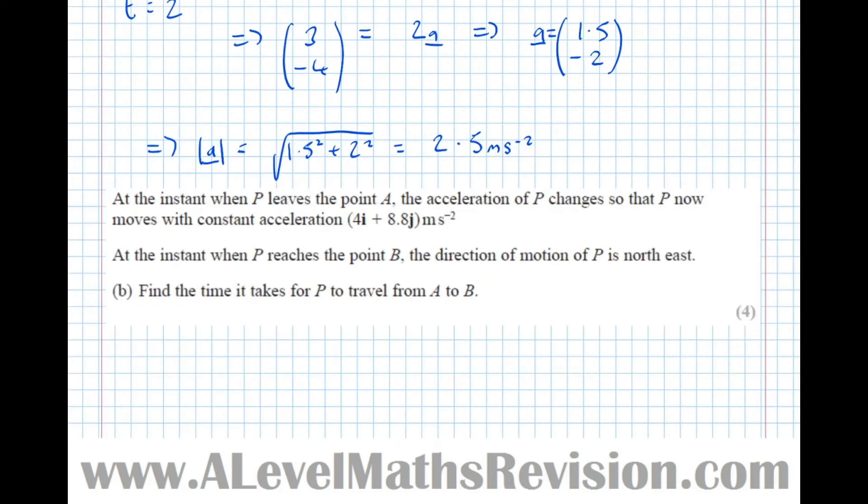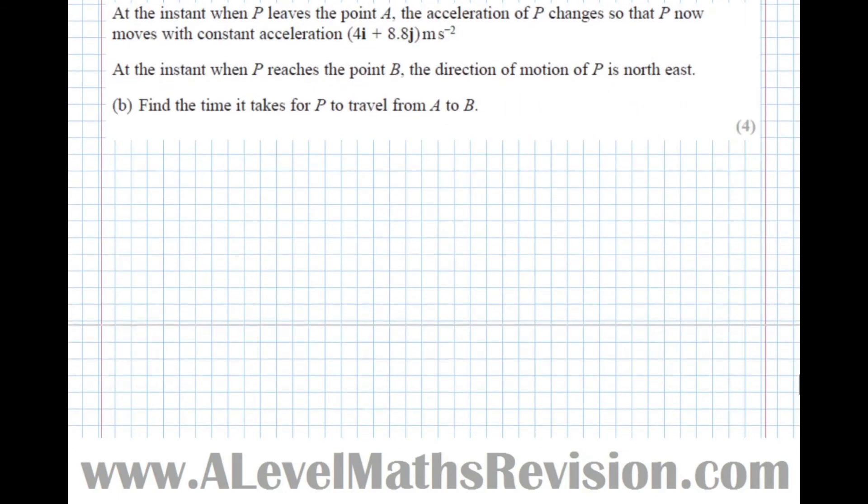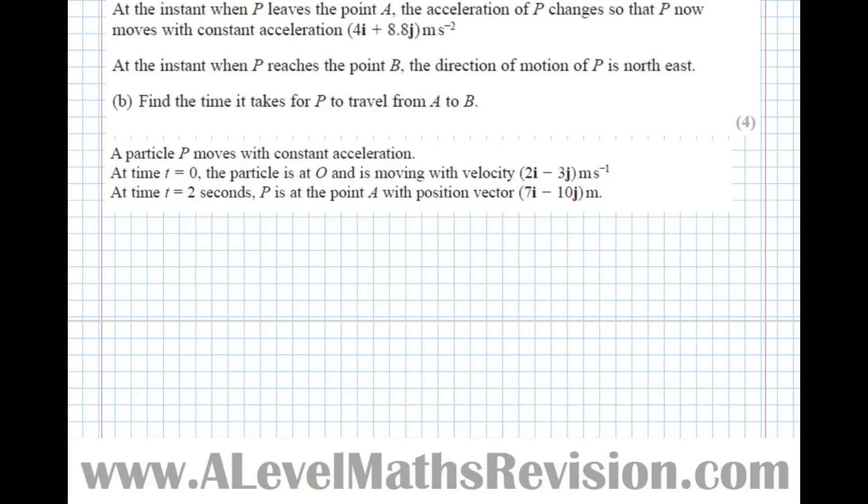Let's remind ourselves of some of the information given in the initial question. The particle P at time equals 0 from the origin was moving with velocity 2 minus 3. At time t equals 2 seconds, P was at point A, and its position was 7 minus 10.